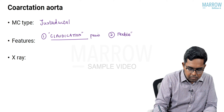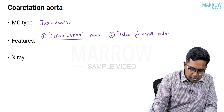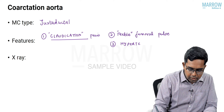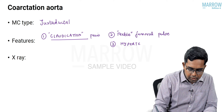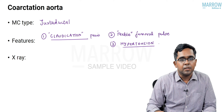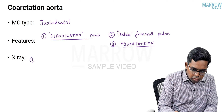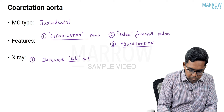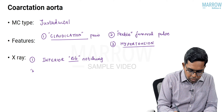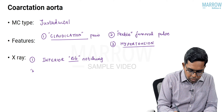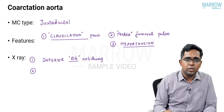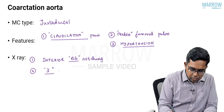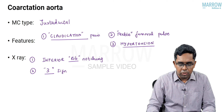Other characteristic features of coarctation include feeble femoral pulses and hypertension in the upper limbs. The characteristic X-ray finding is inferior rib notching caused by enlarged intercostal arteries. There is also a characteristic three-sign on the chest X-ray caused by pre- and post-stenotic dilatation around the coarctation of the aorta.